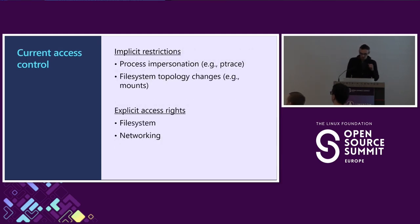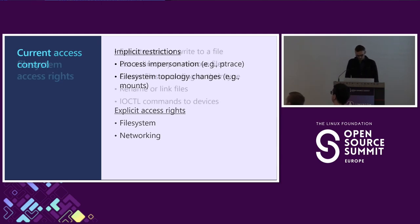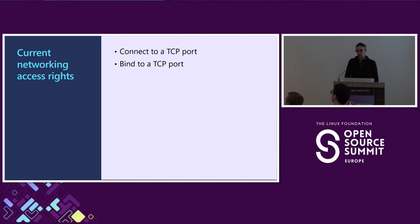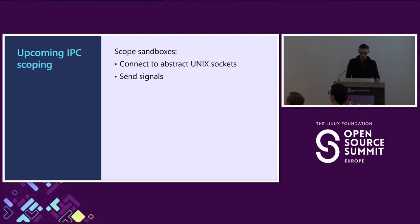Linux provides a set of implicit restrictions to ensure a process cannot escape the sandbox, and a set of explicit configurable access rights. There are mainly file system access rights — to read, execute files, do directory operations, rename files, and so on. There are also a few network access rights, and this set is growing. Right now you can control on which port your application or service can connect to or bind to. There are also upcoming IPC scoping features designed to make sandbox scoping more hermetic, preventing connections through abstract Unix sockets outside the sandbox, and preventing sandbox processes from killing processes outside the sandbox.